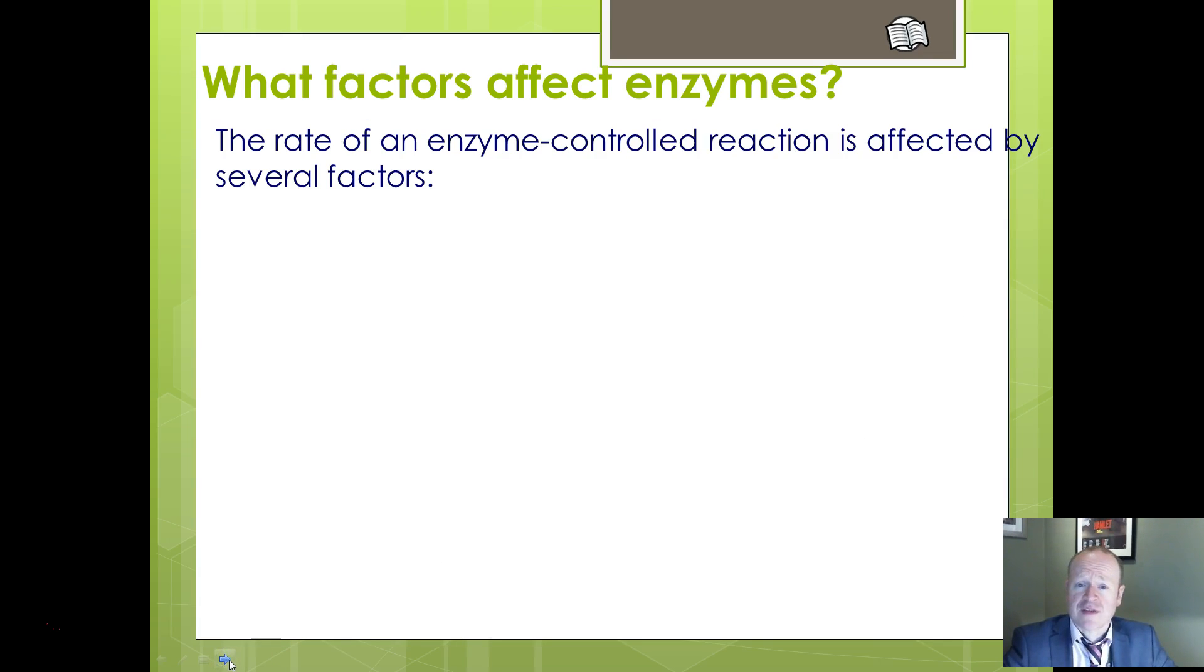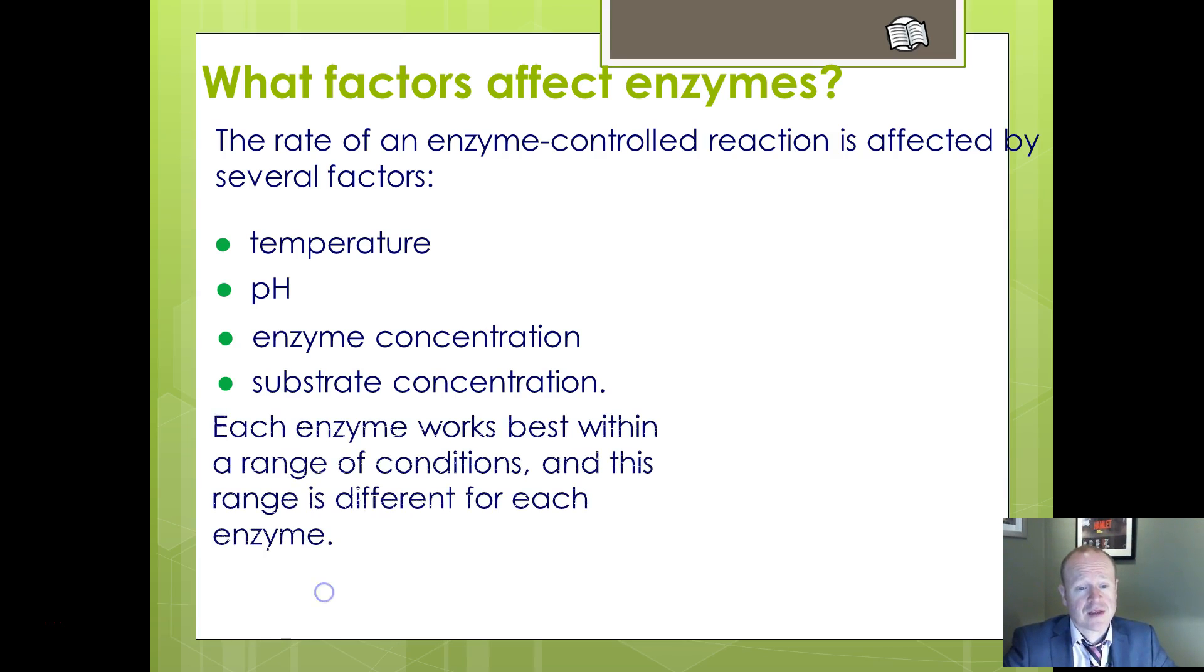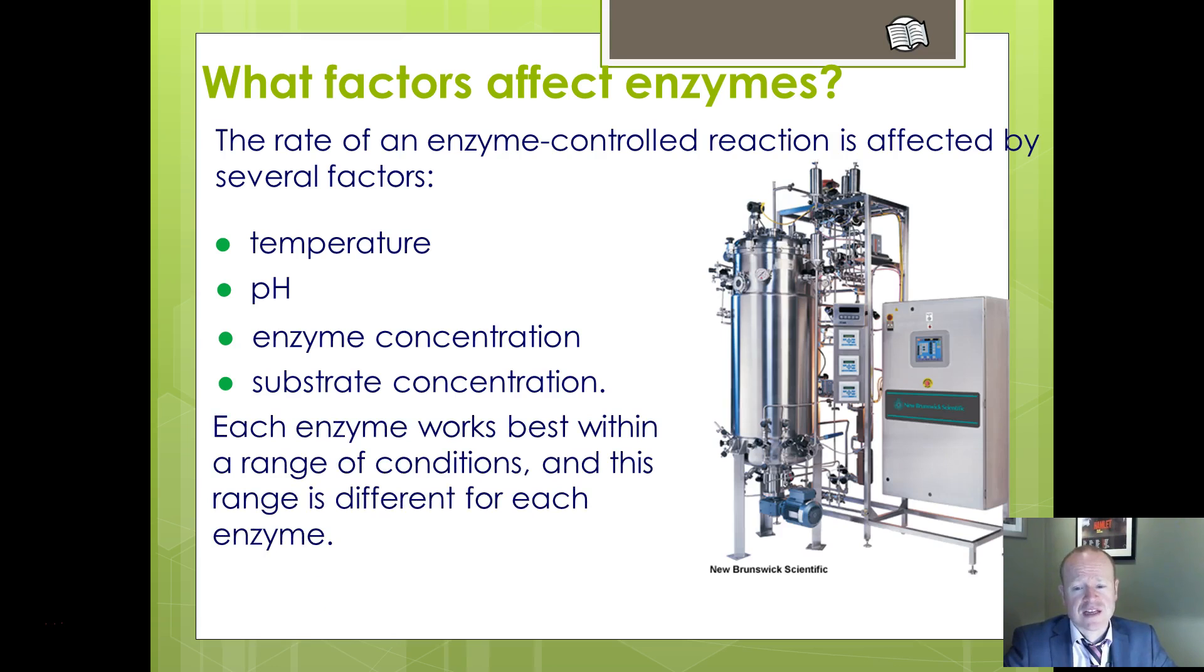OK, what factors affect enzymes? Well, we've seen that from the initial preamble. Temperature, pH, and concentration of both enzyme and substrate will all be factors which affect rates of reaction. Something you should be familiar with from GCSE. Obviously, it depends on the organism and the enzyme that we're talking about. Different organisms will have different optimum temperatures and pHs. Enzymes can also be affected by something called inhibitors. That's a whole different presentation we're going to be looking at at a later stage.